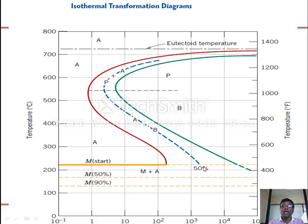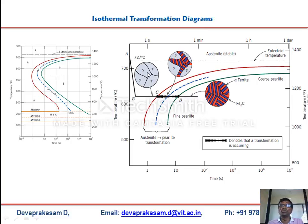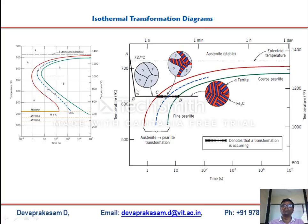The dotted line represents 50% transformation. Looking at the diagram you can see various scales showing the microstructures produced. Cooling to a certain temperature and holding allows austenite to transform to pearlite — this austenite-to-pearlite transformation occurs above the 550–600°C range.